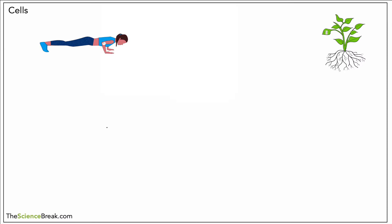Hello and welcome to this first lesson for Key Stage 3 Biology. This is all about cells. If you want, grab a copy of the note sheet from the description below and you can work along with me. The first thing to remember is that all living things are made of cells. Cells are very tiny so we need a light microscope to see them.